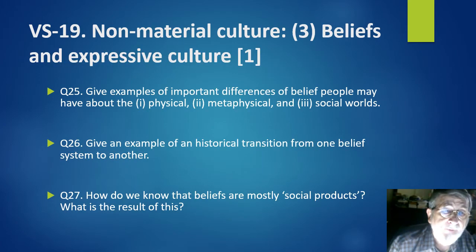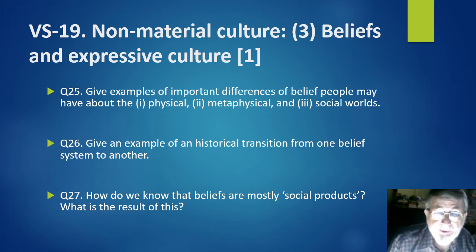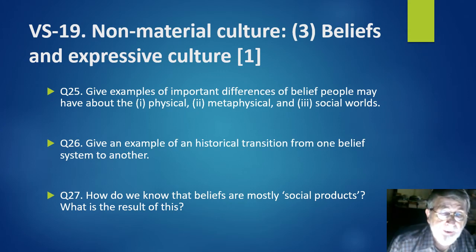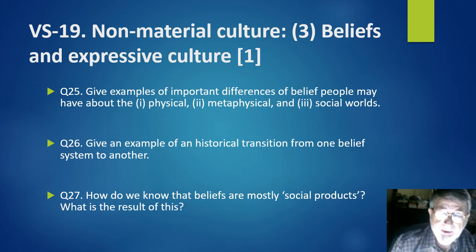And finally, on beliefs and expressive culture. Question 25: give examples of important differences of belief people may have about the physical, metaphysical, and social worlds. Question 26: give an example of an historical transition from one belief system to another. Question 27: how do we know that beliefs are mostly social products? And what is the result of this?